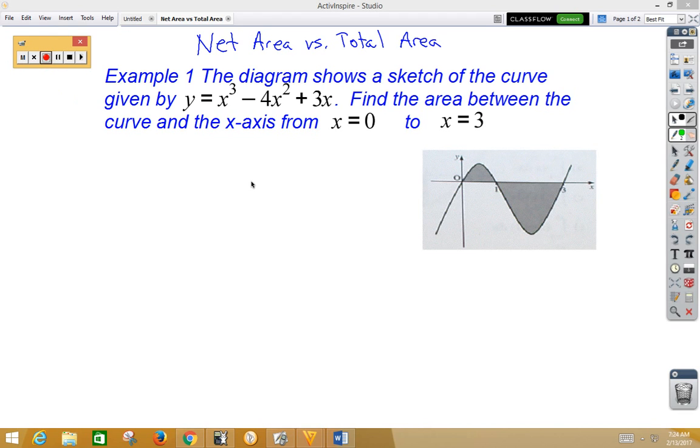In this video, we're going to look at net area versus total area under the curve. Remember, area under the curve is kind of a misnomer. It's the area trapped between the curve and the x-axis. As you can see from this diagram, area can be either above the x-axis or below the x-axis.